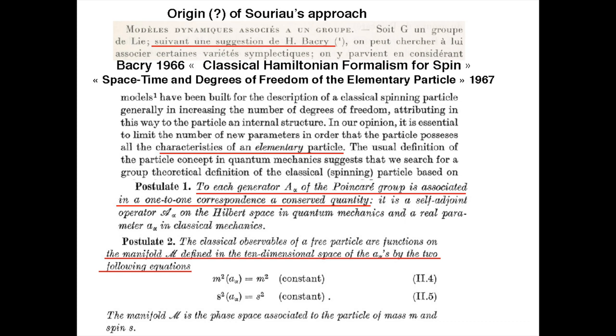In the first paper of Souriau where he mentions this, he says — following a suggestion of Henri Bacri — and actually this suggestion of Henri Bacri was a preprint of 1966, therefore before Souriau's paper, called 'Classical Hamiltonian Formalism for Spin.' The preprint was explicitly devoted to classical Hamiltonian formalism for spin, although for some reasons the published version was called with a different name: 'Space-Time and Degrees of Freedom of the Elementary Particle.'